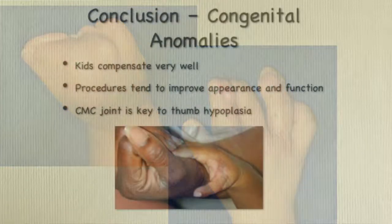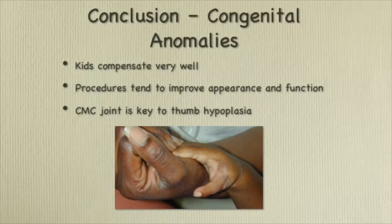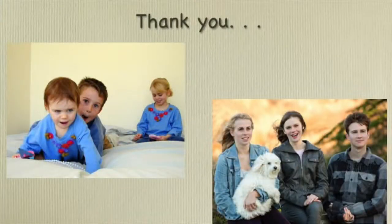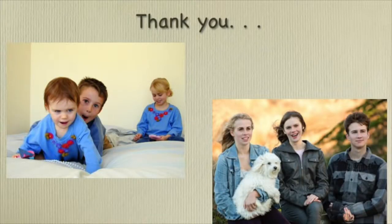So this was just a brief run-through of congenital anomalies. Kids compensate very well — they make you look good. Procedures tend to improve appearance and function, which is a bonus of being a hand surgeon. The CMC joint is key to thumb hypoplasia and will be asked on your exam. Thank you for the wonderful time I've had with you all.